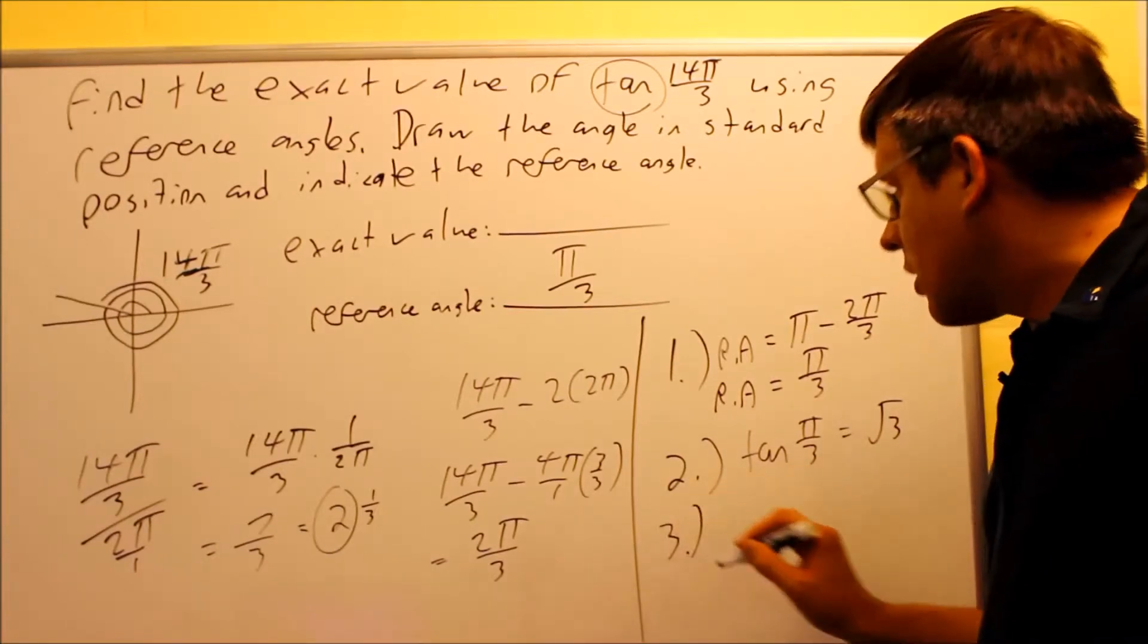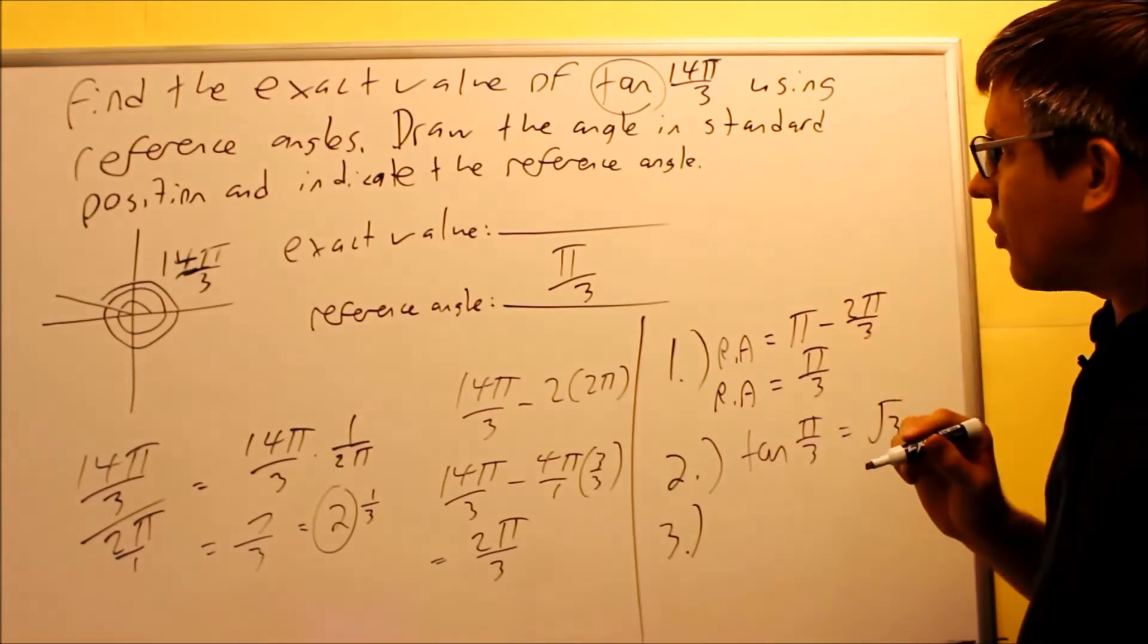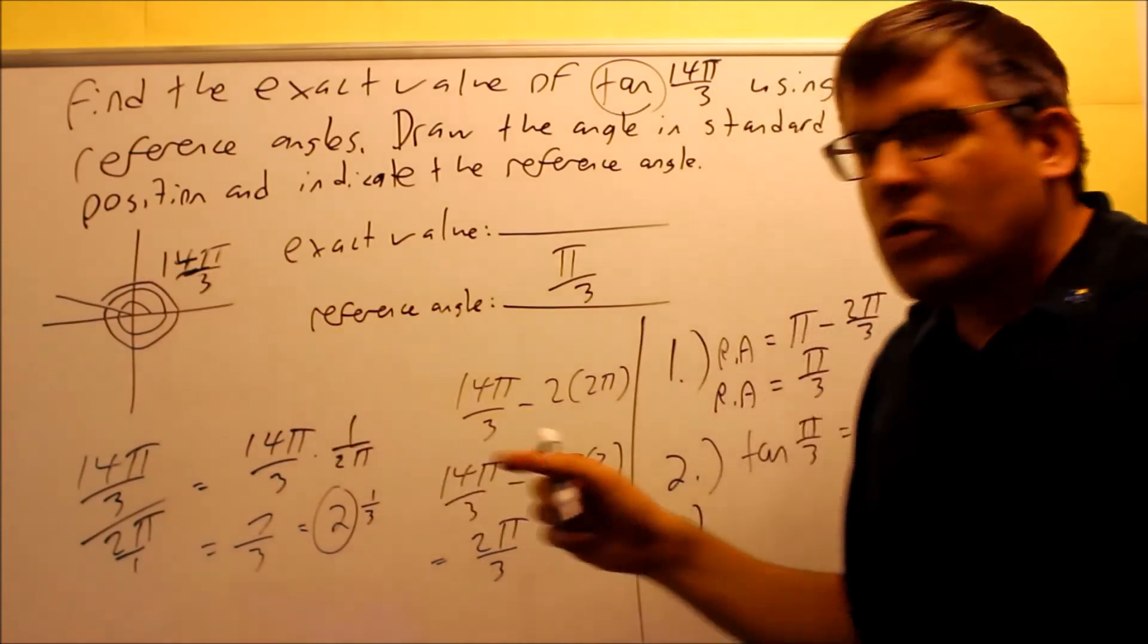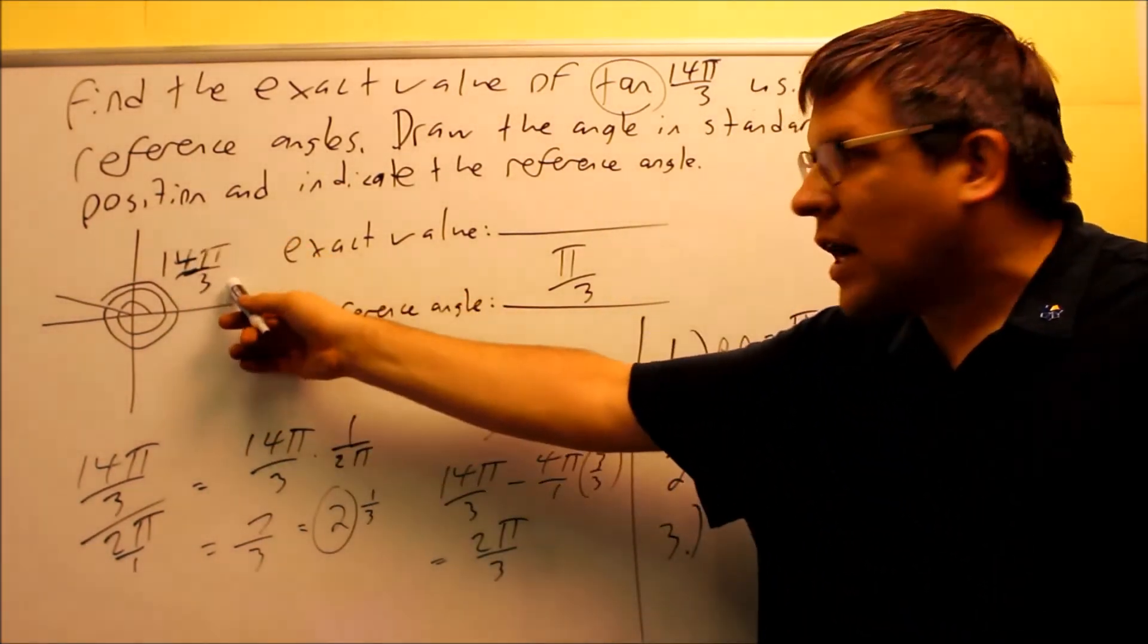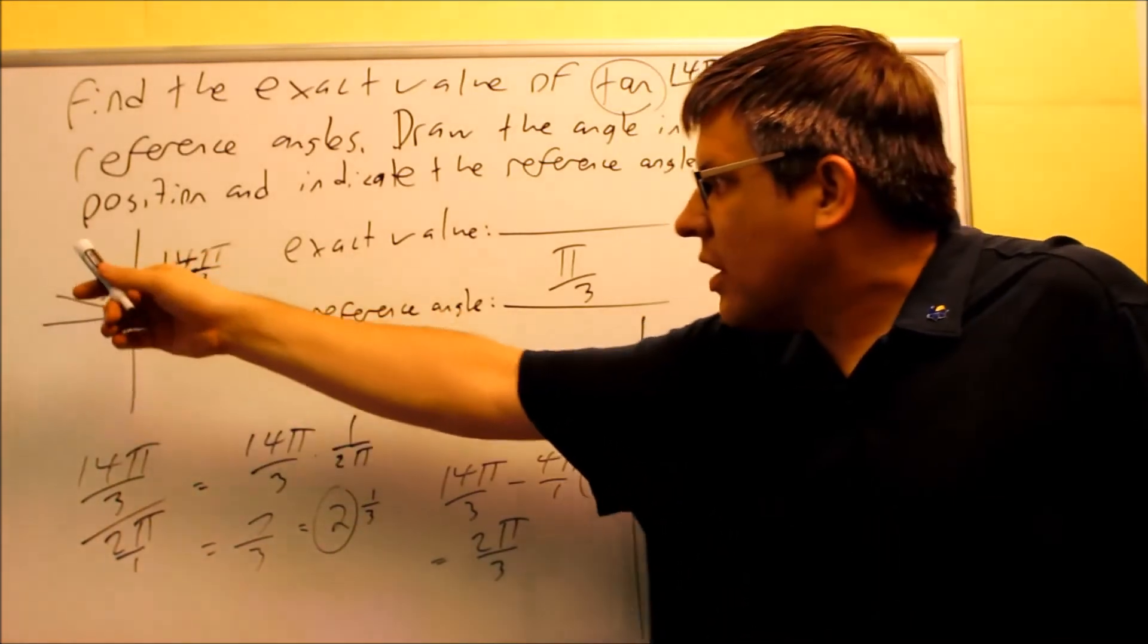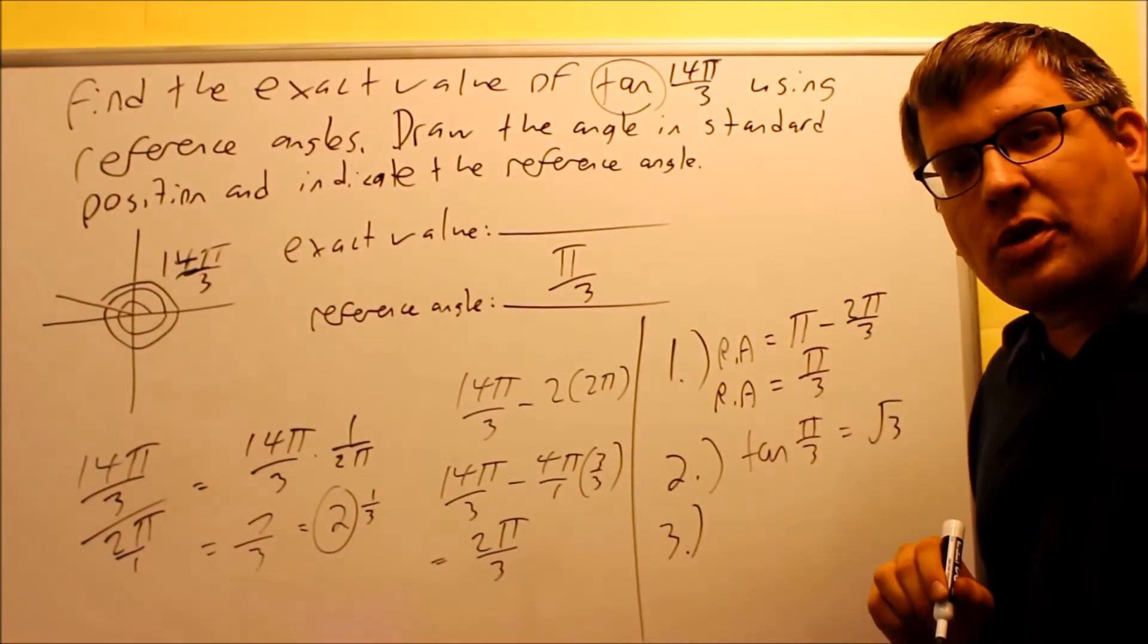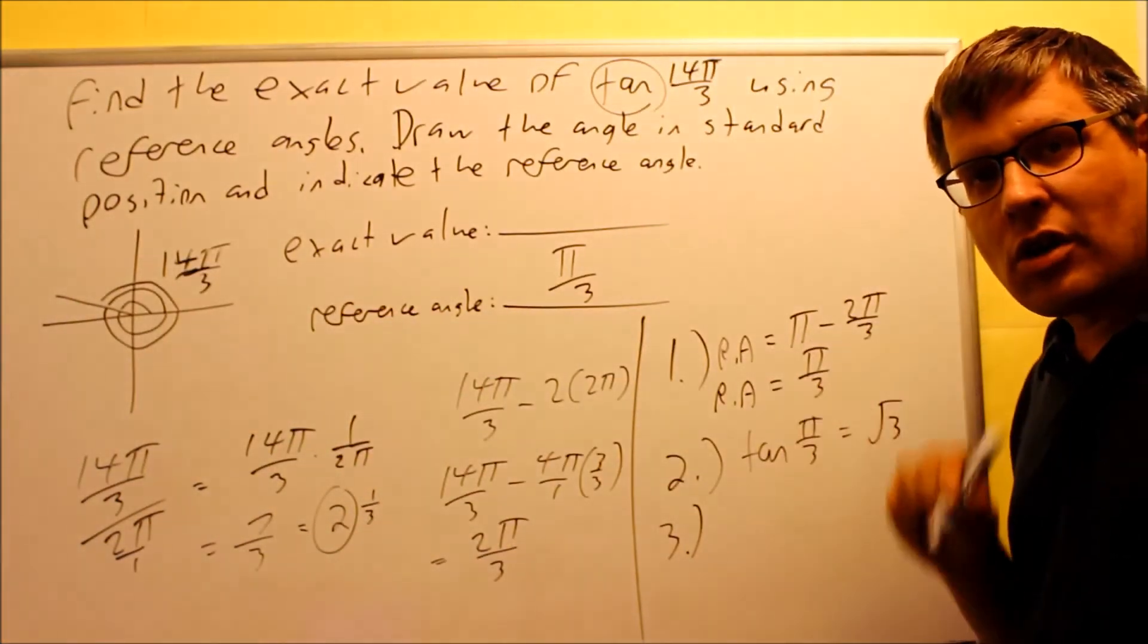Step number three is I want to apply the appropriate sign for the quadrant I'm in. Now, originally, I had tangent. So, tangent in the second quadrant, I'm going to use the all students take calculus sign chart. So I have all, everything is positive here. Students means that in this quadrant, sine is positive, but everything else is going to be negative. So therefore, I know that the tangent has to be negative in the second quadrant.